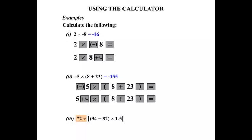So, 72 divided by, so we just write from left to right. Then we have got an open bracket, and then another bracket, so two brackets, two left brackets. Then we have the 94 minus 82, write that down.